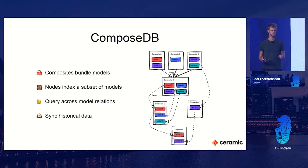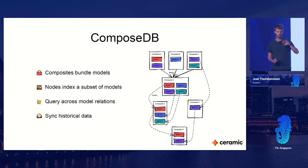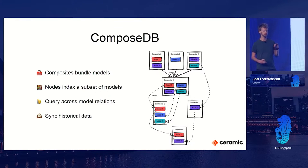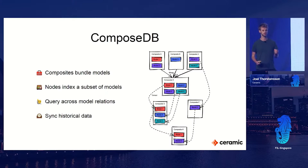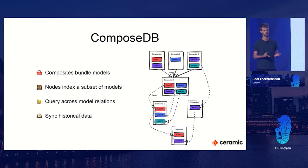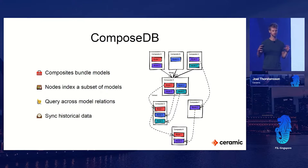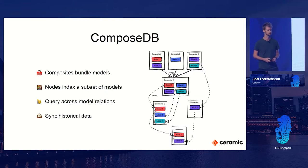In ComposeDB, data models are grouped into something called composites, which is basically a convenient bundle. You can take composites off the Internet, merge them, pull things out of them, and then plug them into your Ceramic node to index that data. For example, Gitcoin has their passport on Ceramic. Once they migrate to ComposeDB, you'll be able to spin up your own Ceramic node and synchronize the Gitcoin passport data - essentially having a copy of all the Sybil-resistance data. Maybe you can build your own quadratic voting based on the same dataset. If your application writes new passports, they'll also be visible in Gitcoin. It's a composability you haven't really seen before with user data on the Internet.